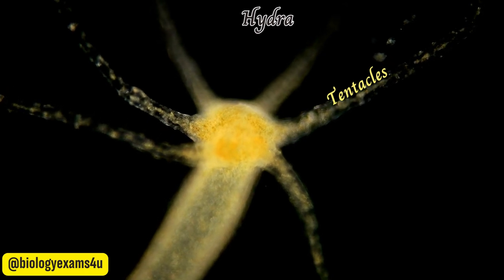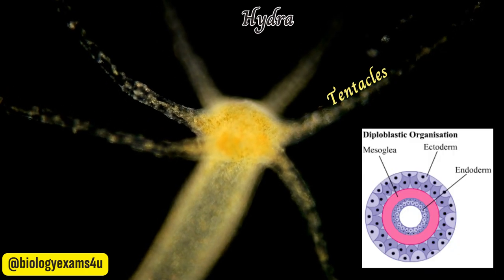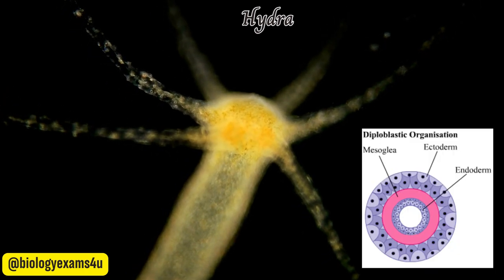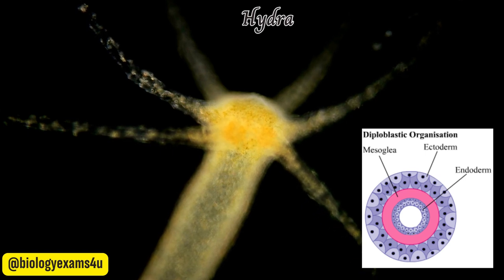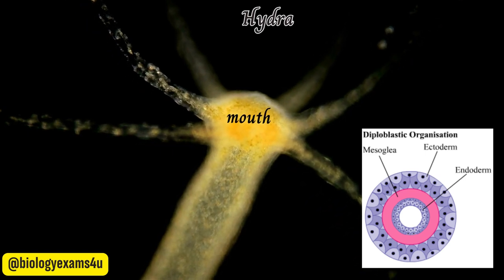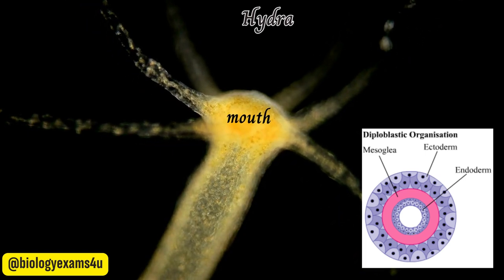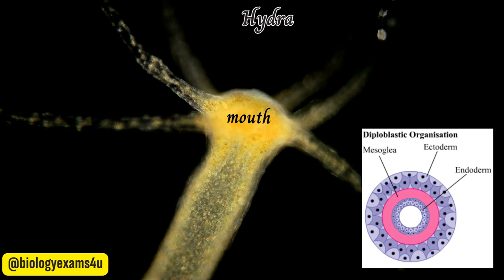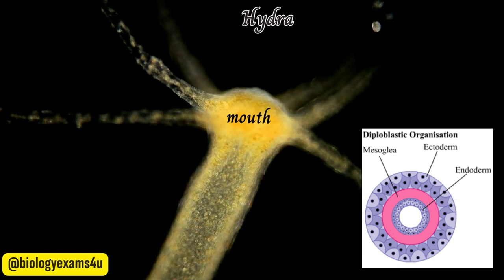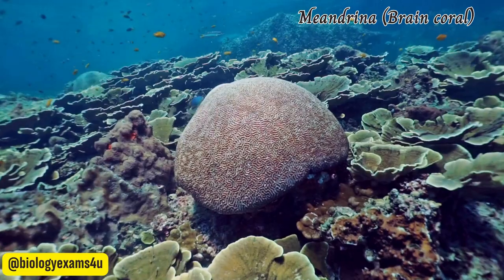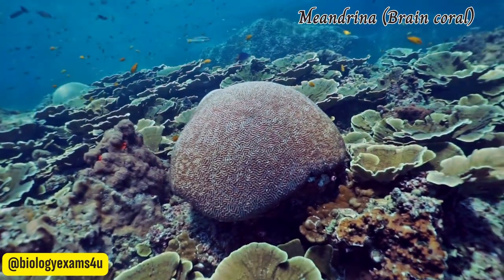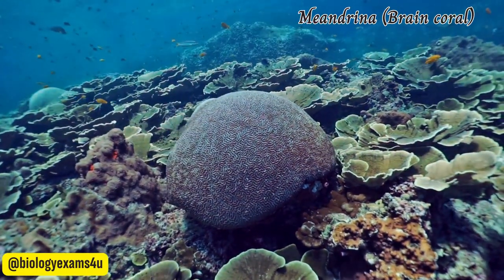Cnidarians are diploblastic and have tissue-level organization. They have a single aperture, the mouth on the hypostome, in the center of their gastrovascular cavity. Digestion occurs both within and outside of cells. The skeleton of some cnidarians, like corals, is made of calcium carbonate.